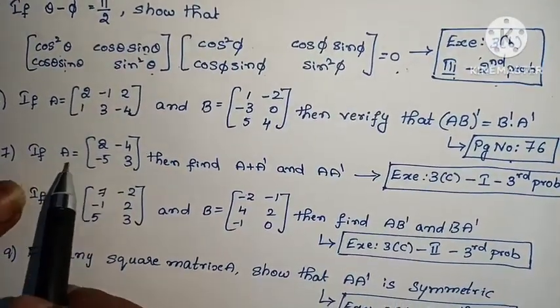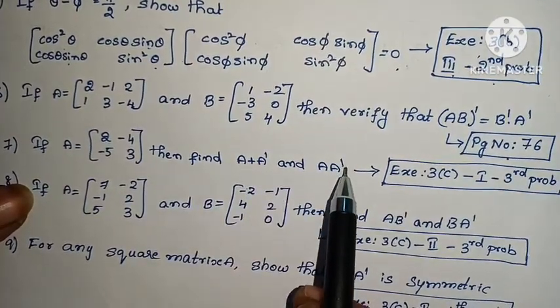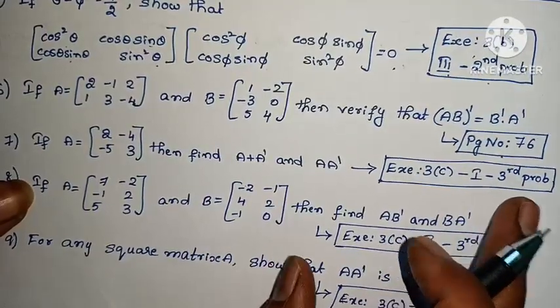Seventh one: if A equals to [2, -4; -5, 3], then find A + A' and A into A'. Exercise 3(c), first roman, third problem.